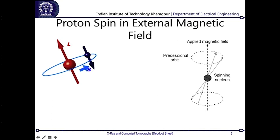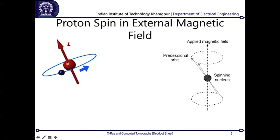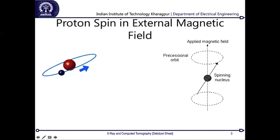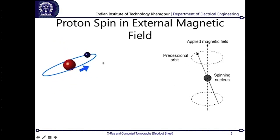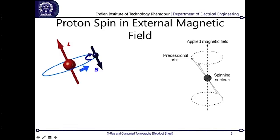For deuterium or H2, there is one proton and one neutron present. Since the nucleus is a positively charged particle spinning around its own axis, it creates a magnetic field. The electron spins at a much higher speed creating a different magnetic field. The cumulative summation of the magnetic field from the electron and the magnetic field from the proton results in an effective magnetic field for one atom in one particular direction.